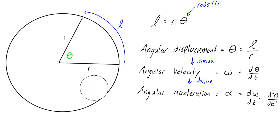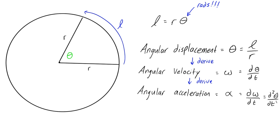Typically we'll be working in radians. For a simple example: let's say we have a disc with a radius of five centimeters, and the outer part rotates through an arc length of six centimeters. Then our angular displacement theta is simply six centimeters over five centimeters. The centimeters cancel out, leaving a dimensionless quantity of six over five.